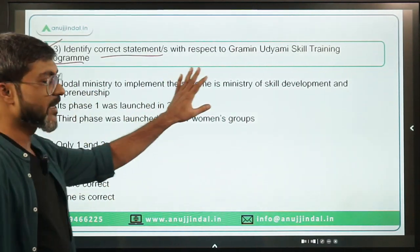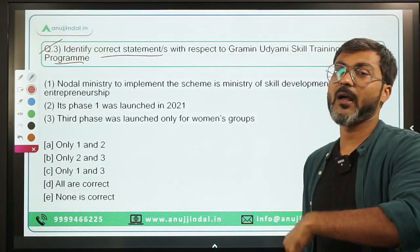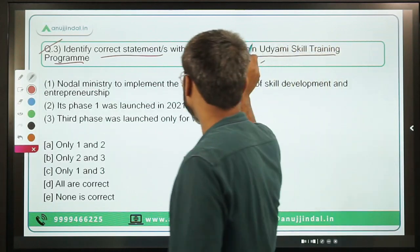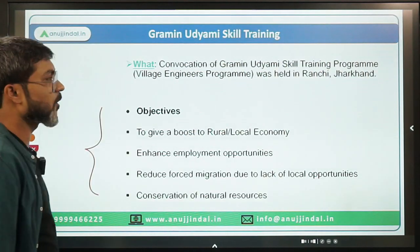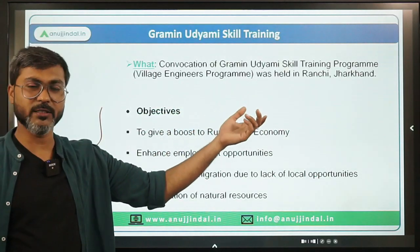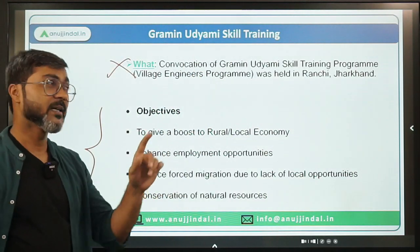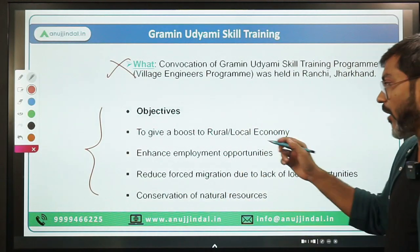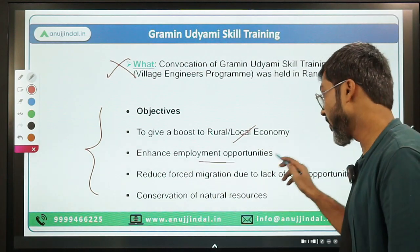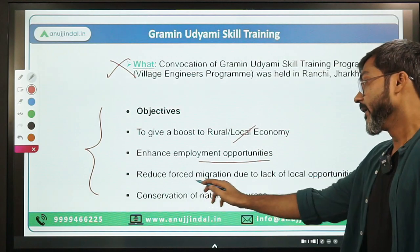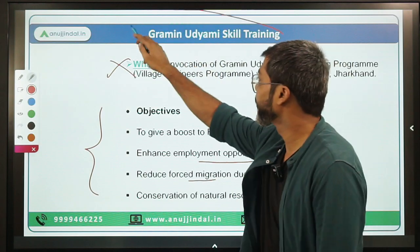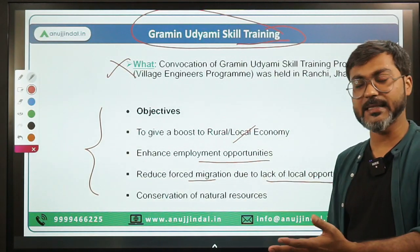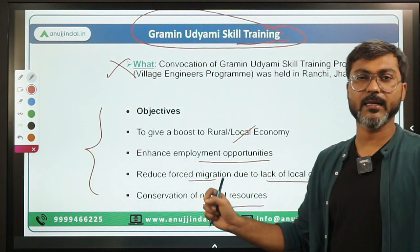Question 3: Consider the following statements with respect to Grameen Udyami Skill Training Program. The objective of this program is to boost the rural and local economy by providing employment opportunities to the youth of that area. It will reduce forced migration due to lack of local opportunities, create livelihood opportunities, and aid conservation of natural resources. These are the four major objectives of this program.